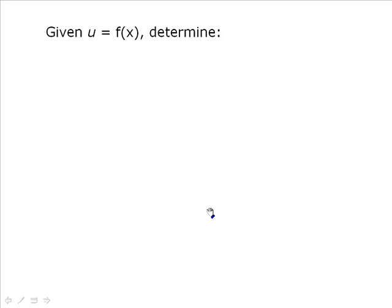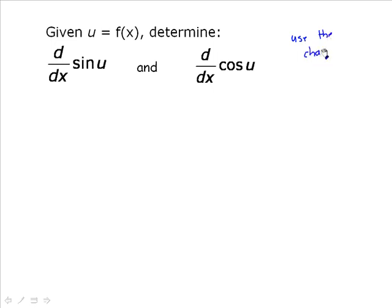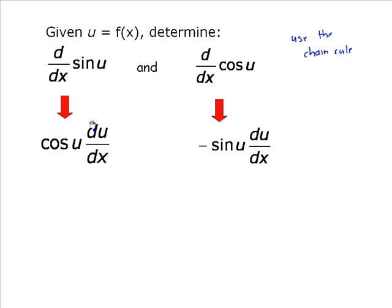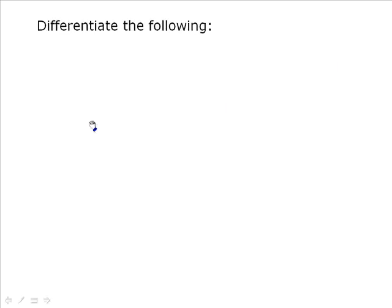So if you're given any function u equal to f(x), the derivative of sine u is equal to cosine u multiplied by the derivative of the inner function — classic chain rule. And the same thing works with cos u: the derivative is negative sine u, multiplied by the derivative of the inner function. Having this information, let's differentiate a number of problems.